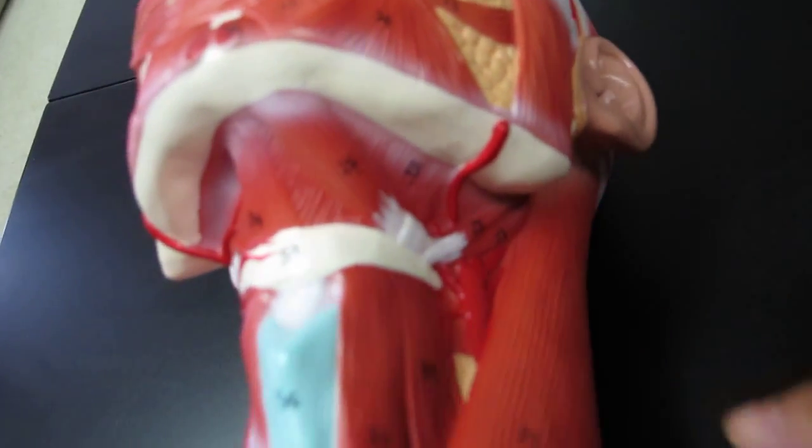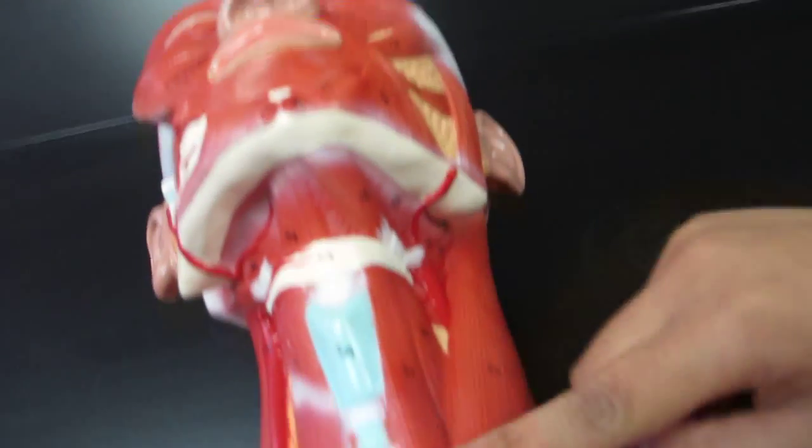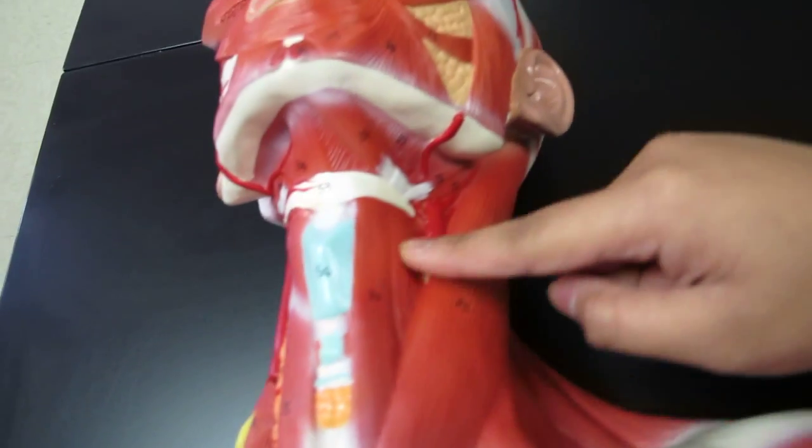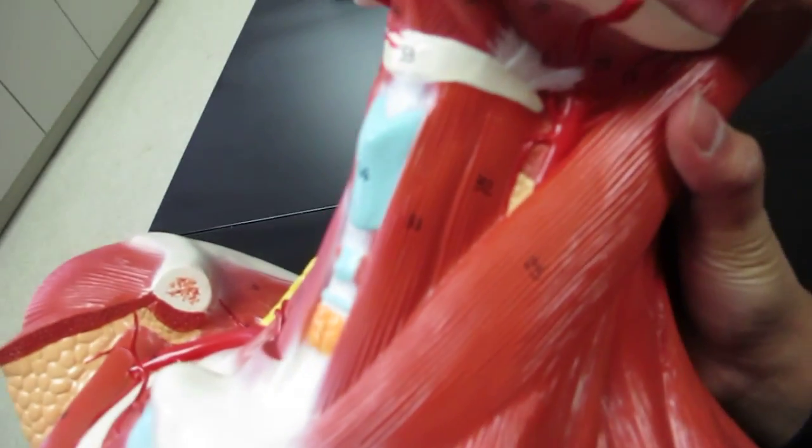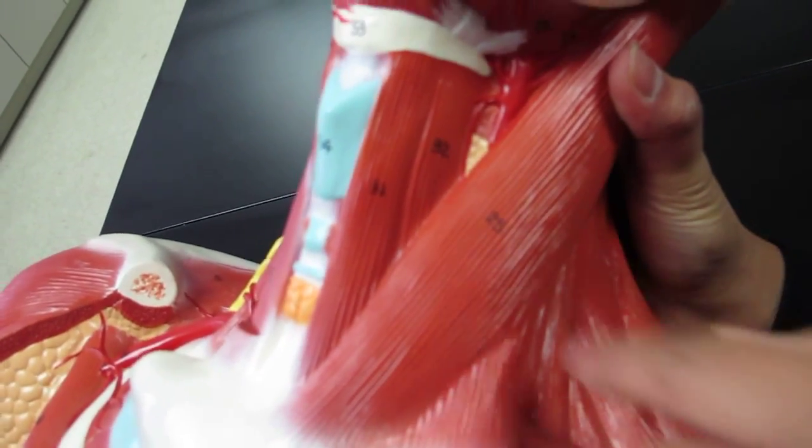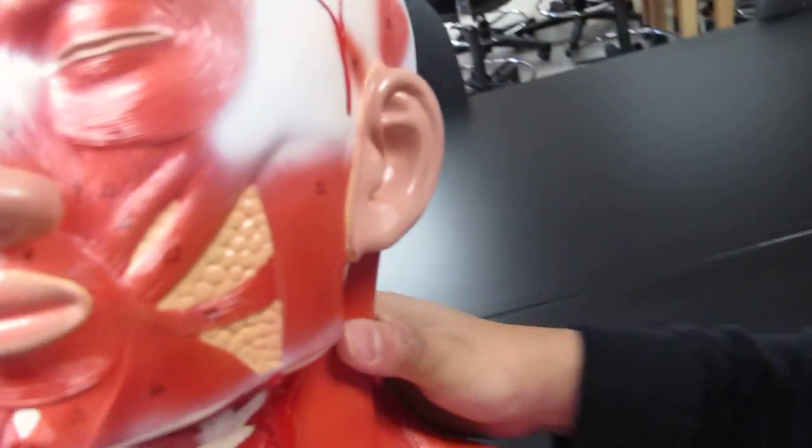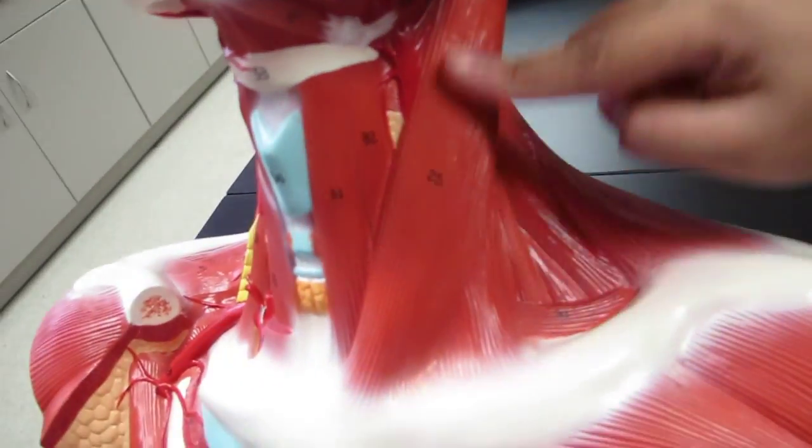Got it, mylohyoid. And thirty-one is the sternohyoid, thirty-two and thirty-three are the same, they're all the same but it's called omohyoid. Twenty-five is the sternocleidomastoid.